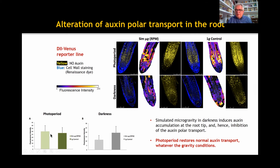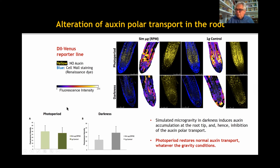In general, the intensity of labeling was higher in the samples grown with photoperiod than in the samples grown in darkness. This means that culture in darkness, whatever the gravity conditions, induced by itself some accumulation of auxin in the root tip, which appears increased in simulated microgravity. Therefore, we can postulate that photoperiod reverts the alteration of auxin polar transport in the root, as detected with the DR5-Venus reporter line.